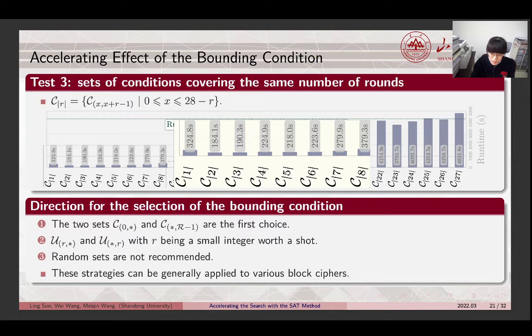Now, we summarize the strategy on how to select the sets of bounding conditions. First of all, we think the two sets C0 star and C star R-1 are the first choice, and are more likely to show remarkable improvements in the runtime over the standard method with no bounding condition. Secondly, if the performance with these two sets do not meet the requirement, the union sets U R star and U star R with R being a small integer worth a shot. The last thing we want to mention is that we also study the efficiency of sets with randomly drawn bounding conditions and evaluate the outcome. The accelerating effect is not visible when the number of conditions in the set is not adequate. Therefore, we do not recommend using random sets.